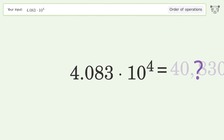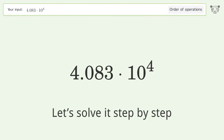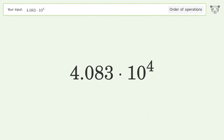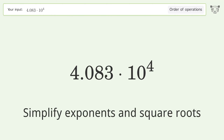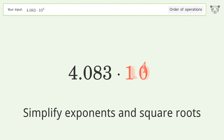You asked Tiger to calculate. This deals with the order of operations. The final result is 40,830. Let's solve it step by step.